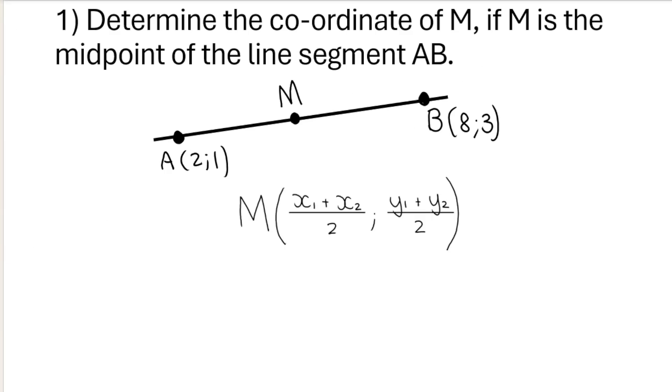So we write down our formula. And again, just like with the distance formula, it doesn't matter which coordinate is your number 1 and which one is your number 2. Let's pretend A is my coordinate number 1 and B is my coordinate number 2. To get the coordinate of M, I take x1, which is, remember, this is x1 and this is y1, this is x2 and this is y2. So I take the x of coordinate 1, which is 2, plus the x of coordinate 2, which is 8, divide that by 2.